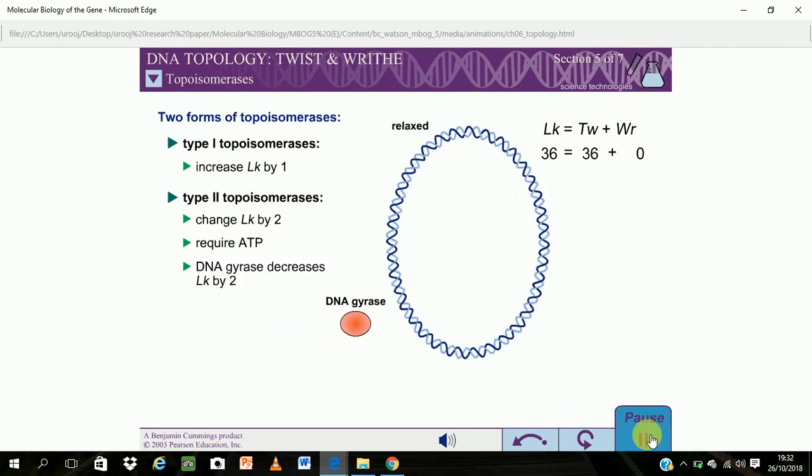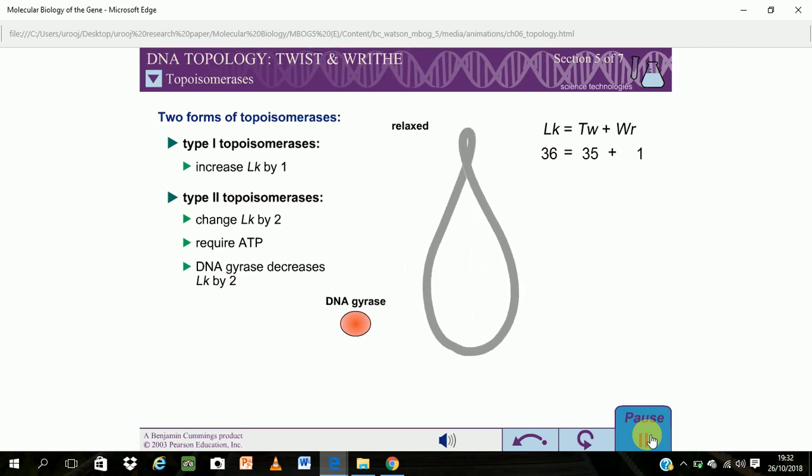Prokaryotes have a special type 2 topoisomerase called DNA gyrase. DNA gyrase decreases linking numbers in steps of 2. DNA gyrase is responsible for the negative supercoiling of chromosomes in prokaryotes.